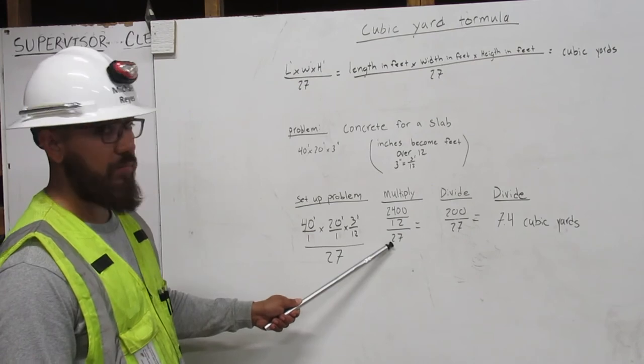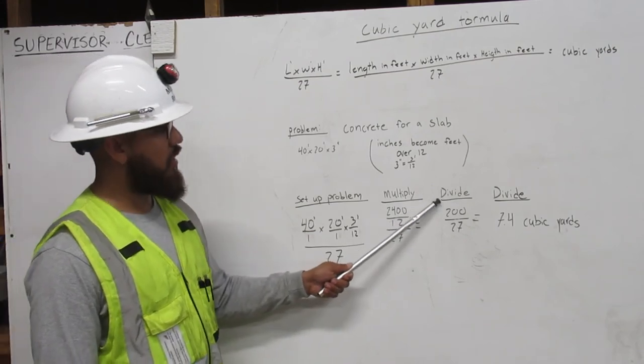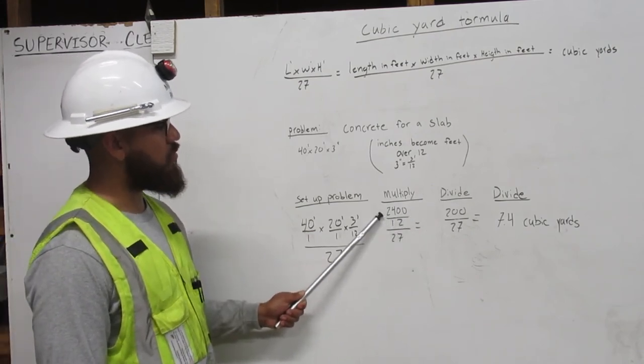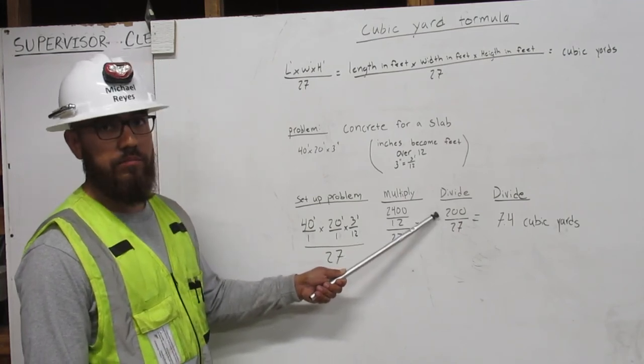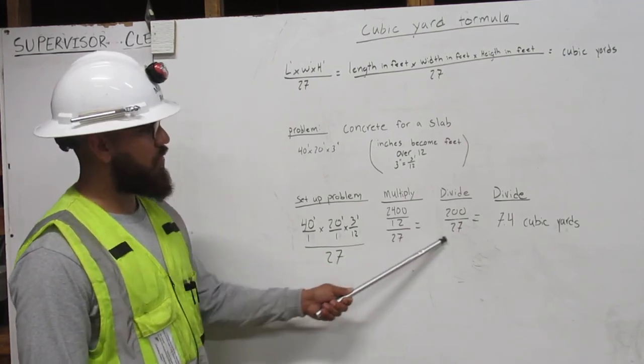We're going to carry 27 over. Next, we're going to divide. 2,400 divided by 12 gives us 200. Carry 27 over.